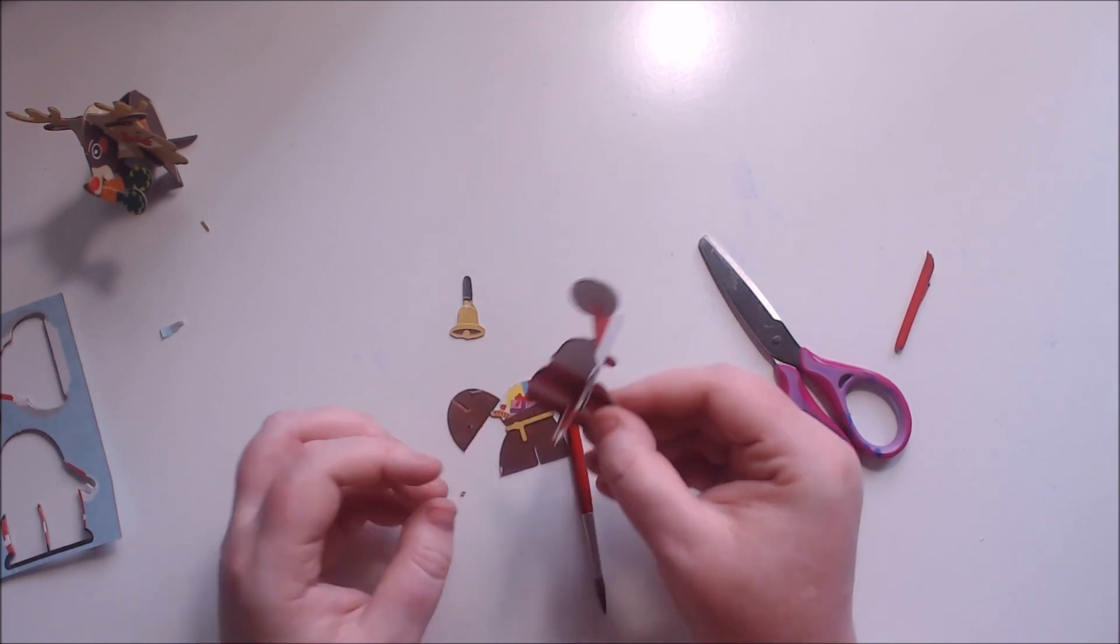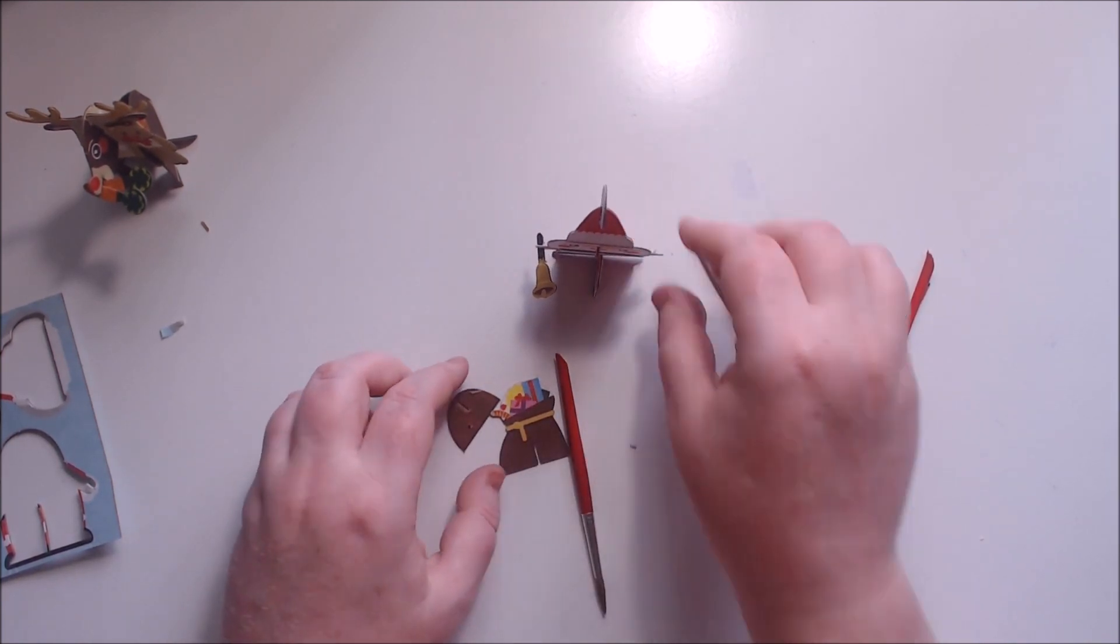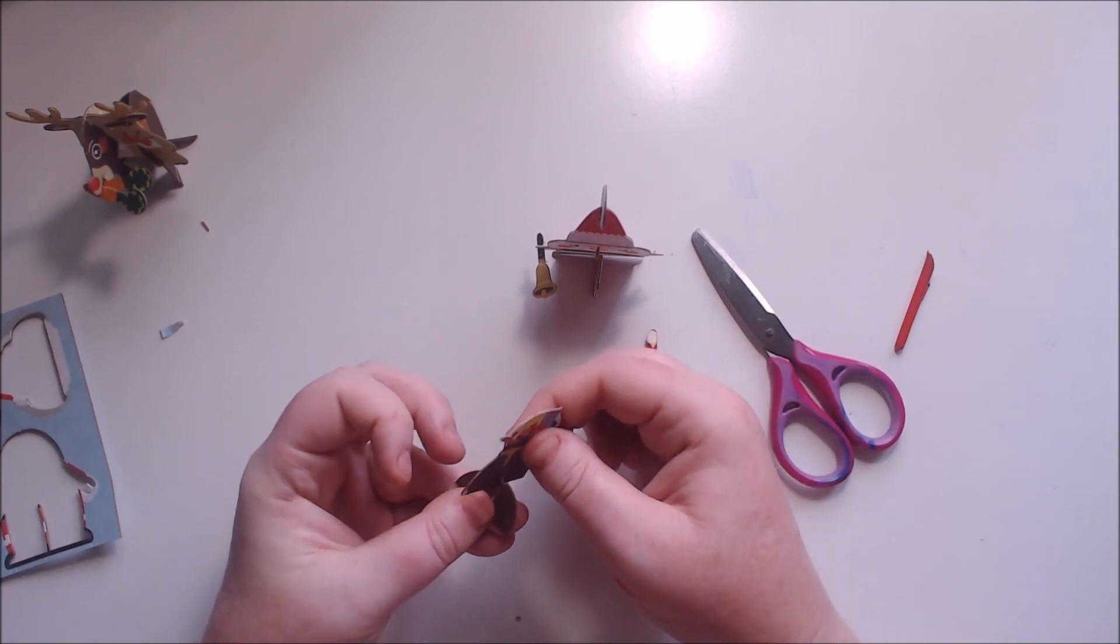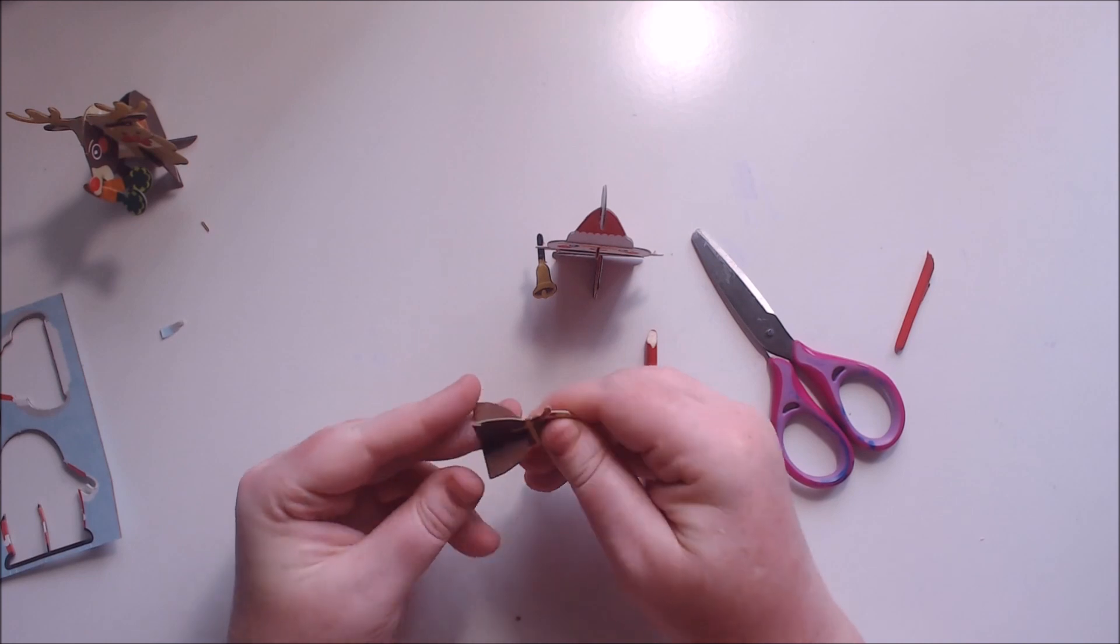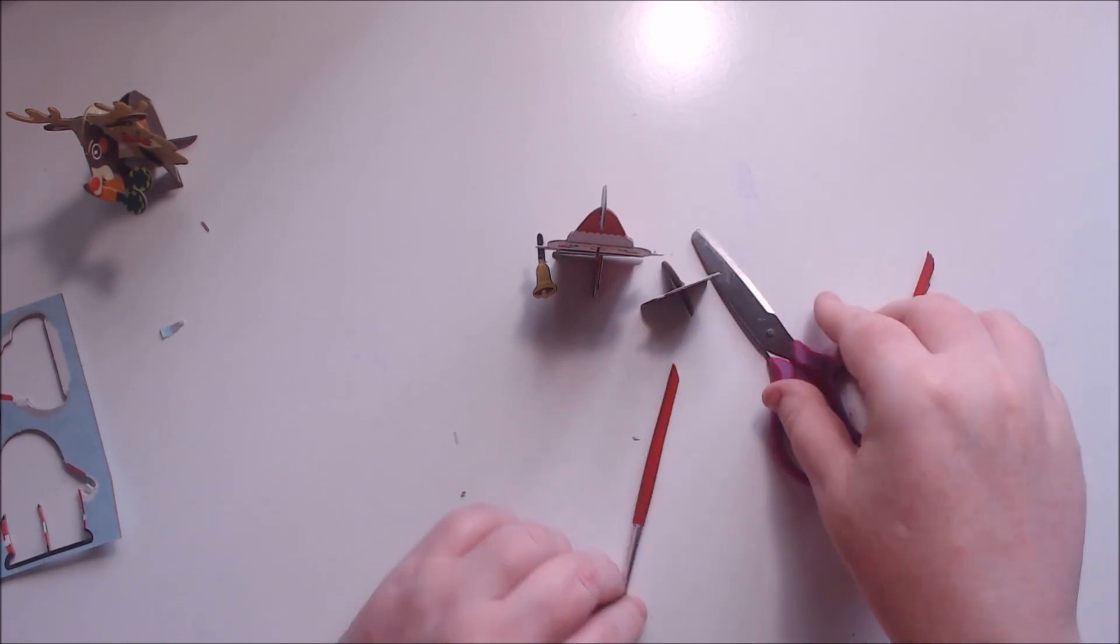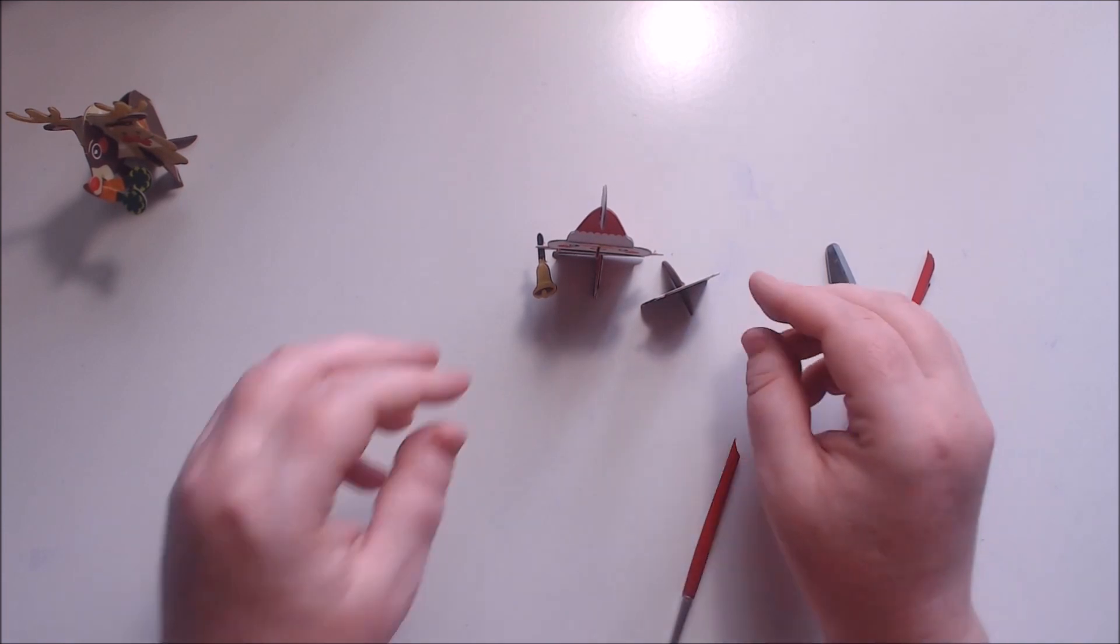And there's Mr. Santa, he's all done and he's sitting properly. And there's his nice little bell so he can ring in the cheery season. And here's his bag of toys. Again, this one wasn't cut very well, but I managed to make it work. And that is Santa himself, all done.